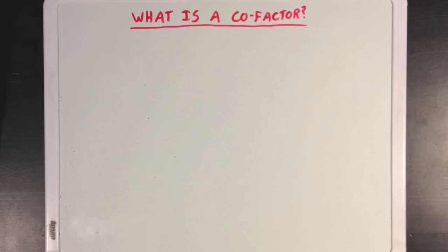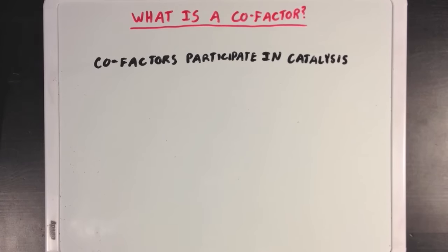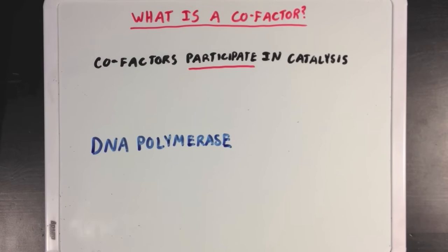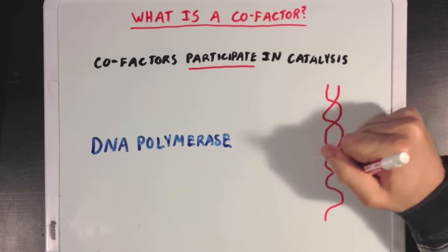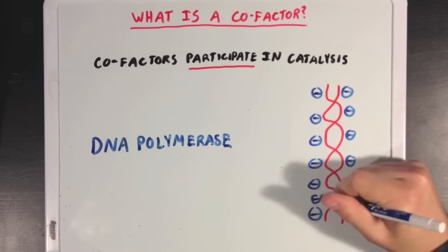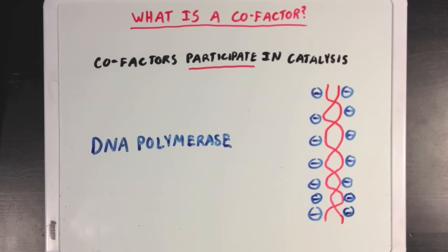Now cofactors are a little different from coenzymes. While coenzymes are only really involved in transferring different things from one molecule to another, cofactors are directly involved in the enzyme's catalytic mechanism. They don't strictly carry something like a coenzyme would, but might be stabilizing the enzyme or the substrates, or helping the reaction convert substrates from one form to another. A great example of this is with the enzyme DNA polymerase. Remember that DNA polymerase is responsible for helping out with synthesizing new DNA during DNA replication.